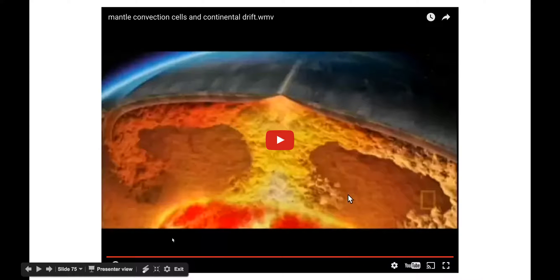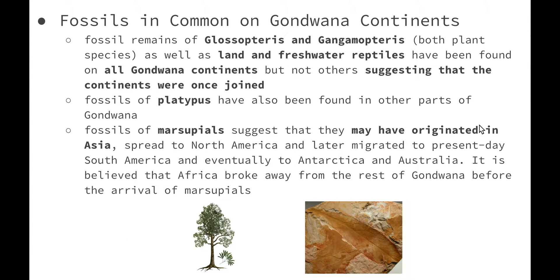The next piece of evidence is fossils that are in common on Gondwana continents. Glossopteris and Gangopteris are distinctive plants from the Permian Age, and fossil remains have been found on all Gondwana continents but not on any northern continents. This suggests these continents were once joined, because how could fossils of the same age be found in countries separated by hundreds of kilometres of water? Reptiles and amphibians also could not have swum such distances, yet their fossils have been found on either side of vast oceans.